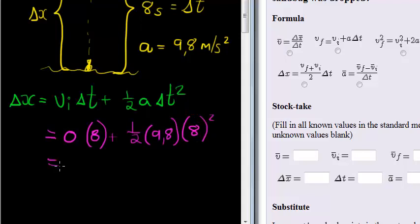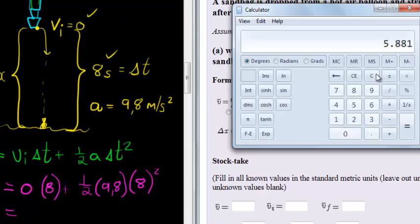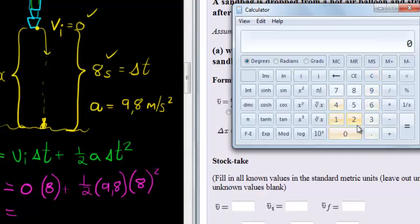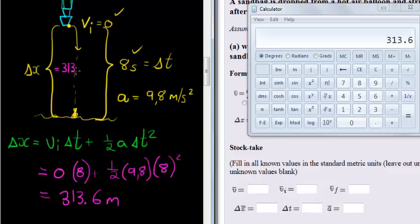And now using our calculator, let's get that answer. Zero times eight will obviously be zero plus one over two times nine point eight times eight squared. Our final answer is three one three point six meters. That is how high it was when the bag was dropped.